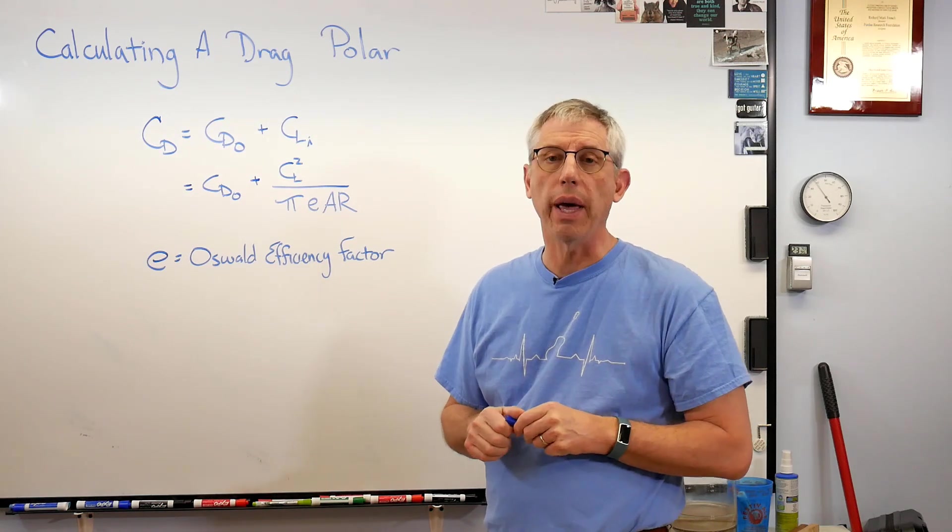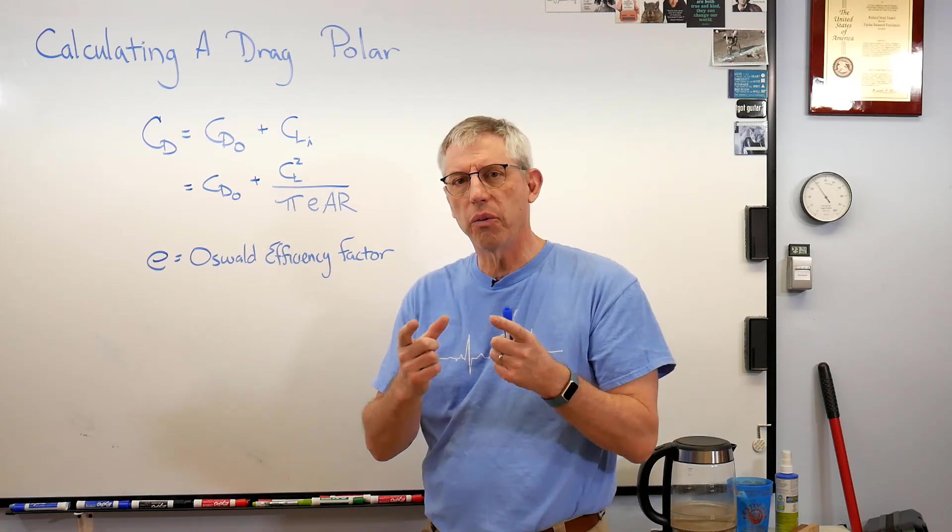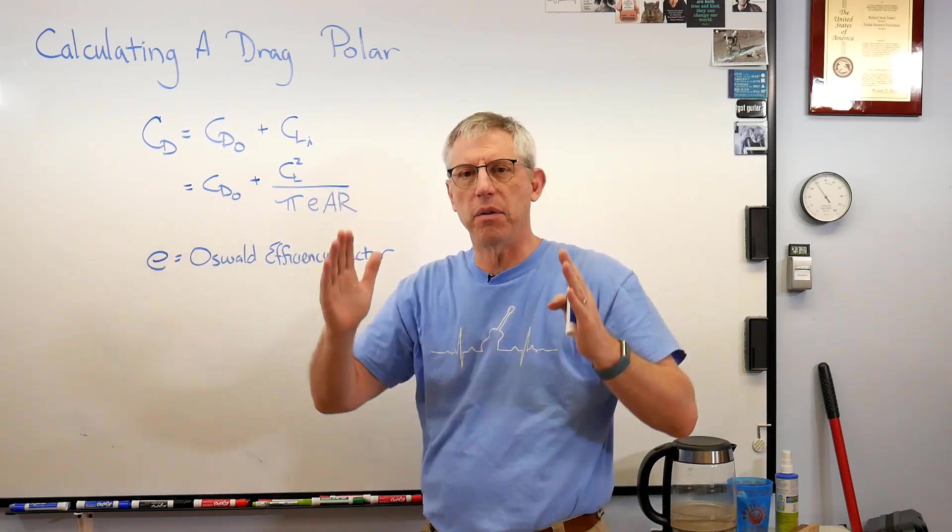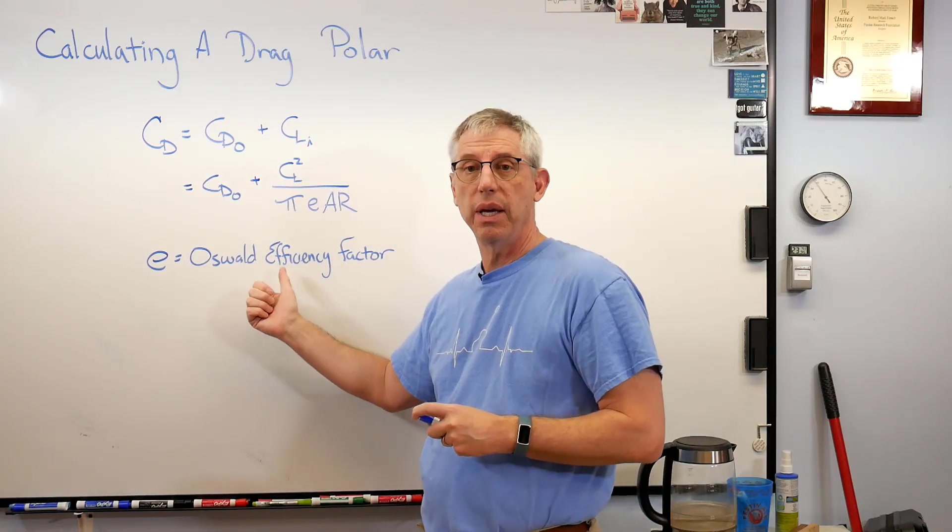Now elliptical wings are hard to make. There's no flat surfaces on them anywhere. All the ribs are not only different sizes, they're not even proportionally different. They have to make this sort of curve. So elliptical wings are hard to make, but if you're willing to put up with it, E is one or pretty close.